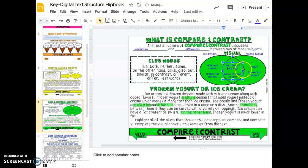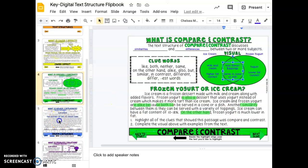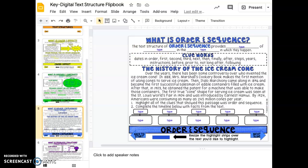The next thing we're going to be talking about today is order and sequence. The text structure of order and sequence provides details of events in the order in which they happen. Here are your clue words: dates in order, first, second, third, next, then, finally, after, steps, years, instructions, before, prior to, not long after, and following.